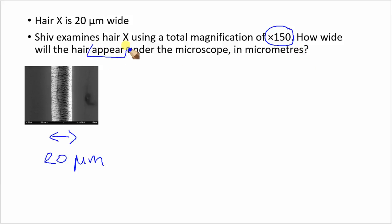We want to find out what it actually appears. Its actual size is 20 micrometres, but we're going to magnify that by 150 times. So it's going to appear much bigger than that. 20 multiplied by 150 will give us 3000 micrometres.